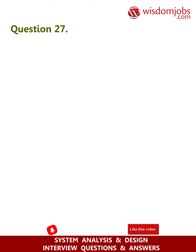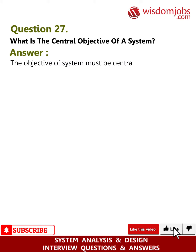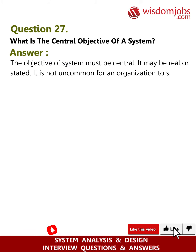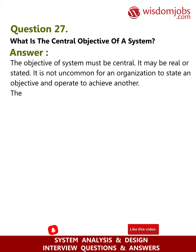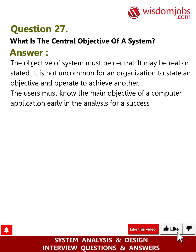Question 27: What is the central objective of a system? Answer: The objective of a system must be central. It may be real or stated. It is not uncommon for an organization to state an objective and operate to achieve another. The users must know the main objective of a computer application early in the analysis for a successful design and conversion.